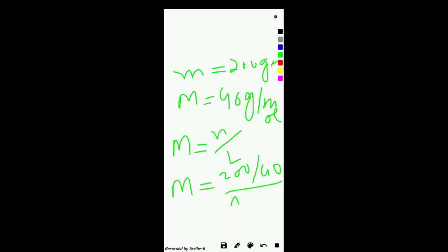So, mass in grams of NaOH will be 200 grams, while the molar mass of NaOH is 40 grams per mole. Now, the molarity will be n by V, which is n divided by 1 liter.